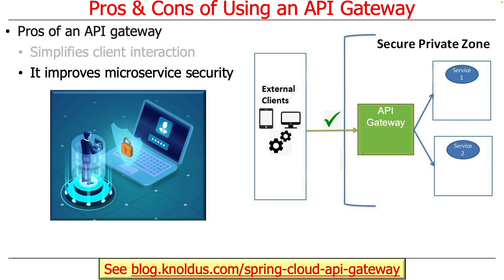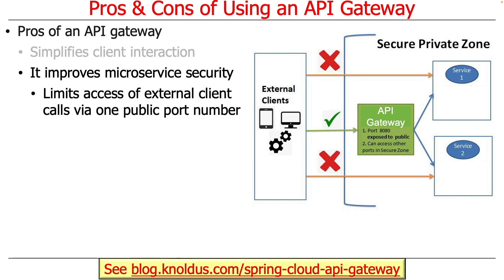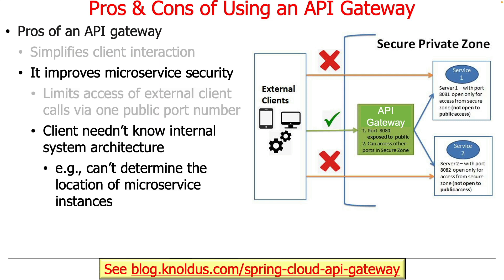Another benefit is that this can be used to improve microservice security. You only expose one port number — the port number of the API Gateway — and internally within the so-called secure private zone, the gateway knows how to contact the other ports on the other services. However, those ports are not exposed and not visible to the outside. Clients don't need to know and can't know the internal system architecture. They only know about port 80 or whatever you choose as your public port, and all the other ports become an implementation detail. This gives you greater control over the surface area that people could use to attack your system.